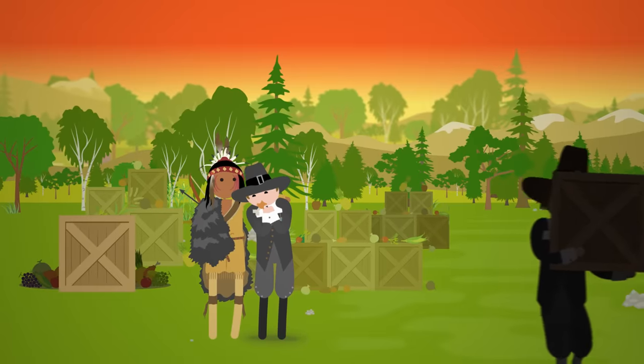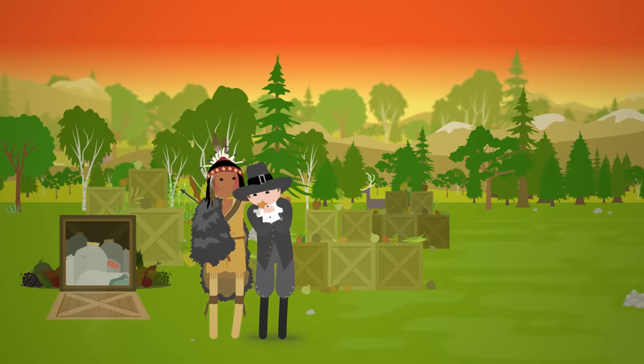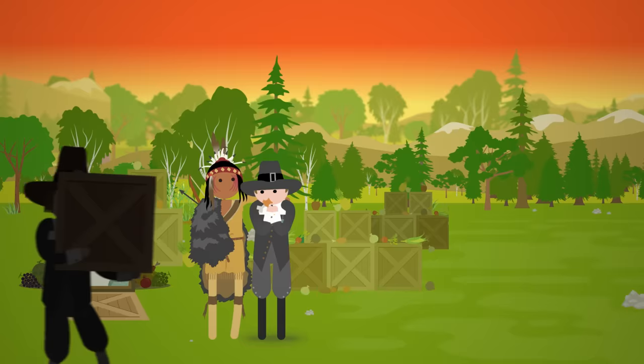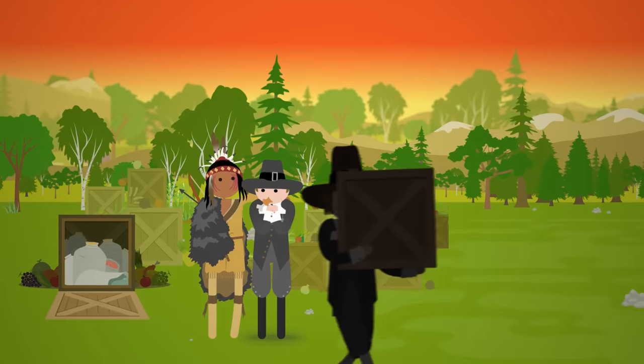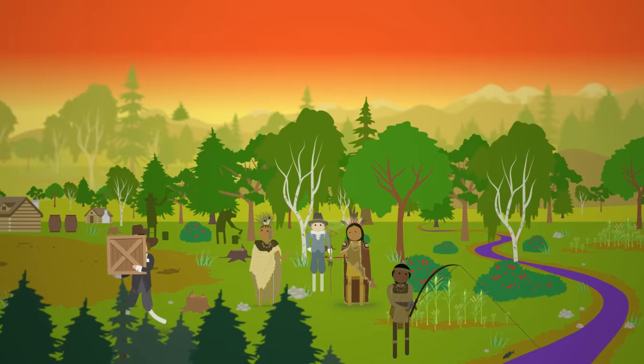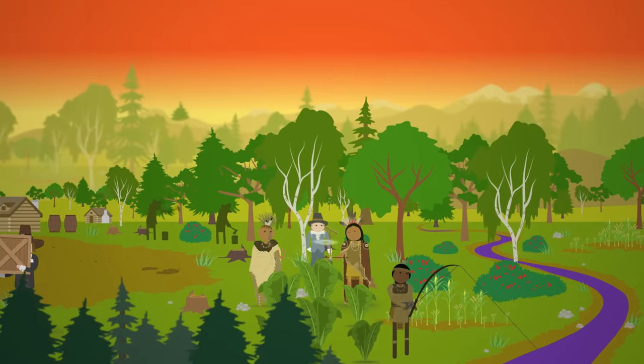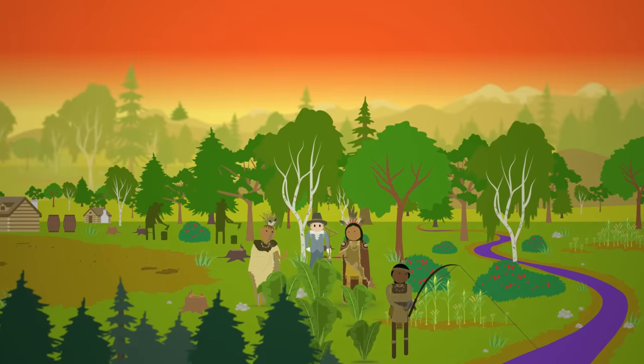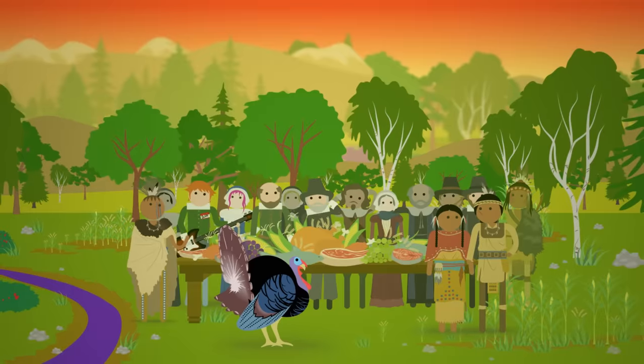The only reason they didn't all die was that local Indians, led by Squanto, gave them food and saved them. A year later, grateful that they had survived mainly due to the help of an alliance with the local chief Massasoit, and because the Indians had taught them how to plant corn and where to catch fish, the Pilgrims held a big feast, the first Thanksgiving. Thanks, Thought Bubble.